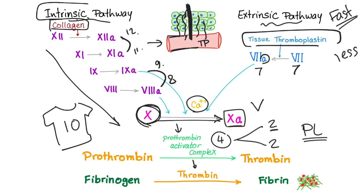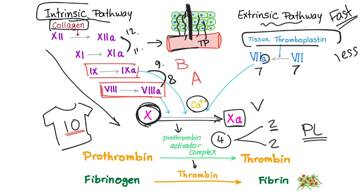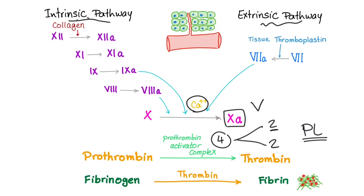So we have four factors leading to factor 10. Any deficiency in factor 8 is called hemophilia A. Deficiency in factor 9 is called hemophilia B. We cannot have deficiency of factor 10 because it's the most important factor — we would die without it. Factor 11 deficiency is called hemophilia C. To summarize: hemophilia A is factor 8, hemophilia B is factor 9, hemophilia C is factor 11.